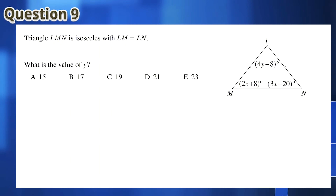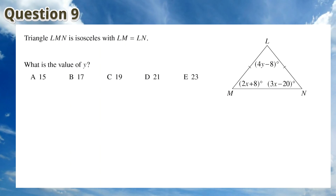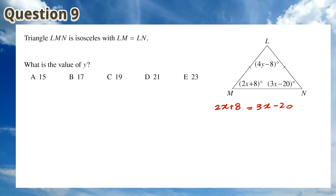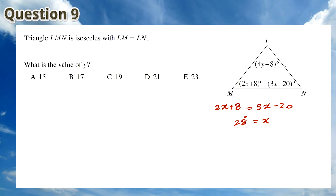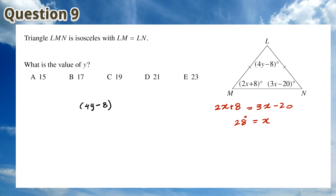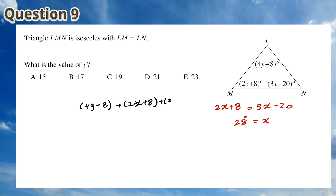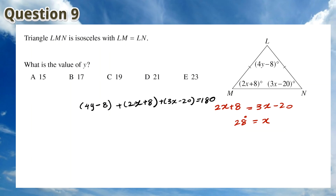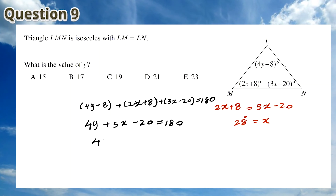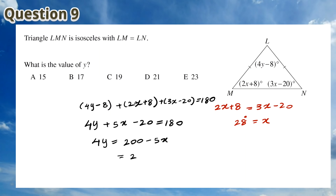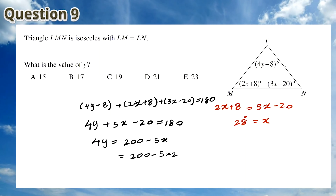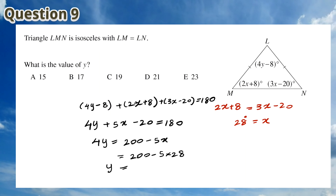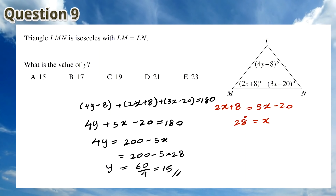For Question 9, since the triangle is an isosceles triangle, LM is equal to LN and the angle LNM is equal to the angle LMN. This means that 3x minus 20 is equal to 2x plus 8, so x is equal to 28 degrees. Since the angle sum of a triangle is 180 degrees, we get 4y plus 5x minus 20 equals 180. So 4y equals 200 minus 5x. Substituting x = 28, y equals 60 divided by 4, which is 15. This means the answer is A.